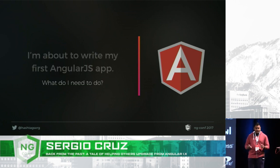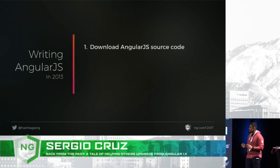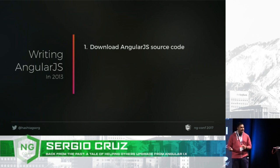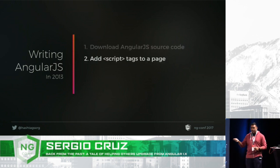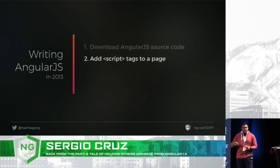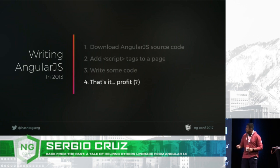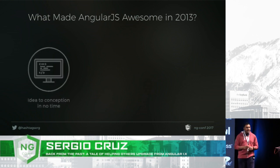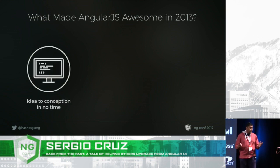Back then, the steps were very straightforward. When I wrote my first Angular app, I went to the AngularJS website and downloaded the libraries I needed to get going. Once I'd done that, I threw those scripts on the HTML template, threw some script tags, wrote some code, and that was it. That's all it took.